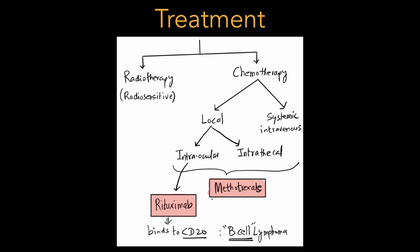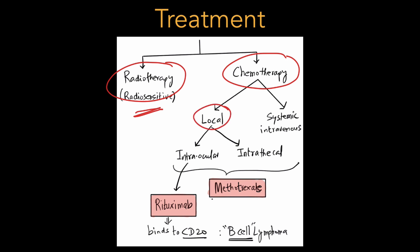As for treatment, options include radiotherapy or chemotherapy — these tumors are radiosensitive. However, these days chemotherapy is preferred, given either locally or as systemic intravenous. Locally can be intraocular or intrathecal, that is through the subarachnoid space. For all these routes — intraocular, intrathecal, and systemic intravenous — we prefer methotrexate. Recently, intraocular rituximab has also been tried because these B-cell lymphomas express CD20 receptors on the cells, and rituximab specifically binds to CD20.